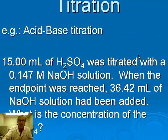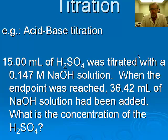Here's our acid-base titration. Fifteen milliliters of H2SO4 is titrated with a 0.147 molar NaOH solution. When the endpoint was reached, you have delivered 36.42 milliliters of the NaOH solution into the acid, and the task here is to figure out what is the concentration of the H2SO4. So let's go to another workspace and set this up, and then we'll solve this problem.